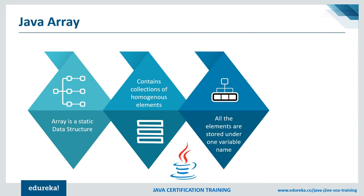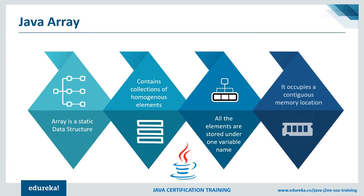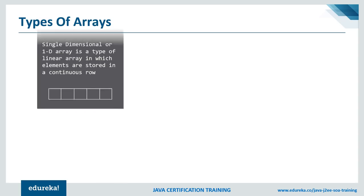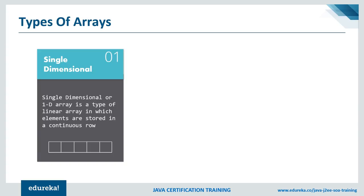All elements are stored under one single variable name via a reference variable pointing to the array. The data stored in an array occupies a contiguous memory location — the elements are neighbors. We can represent data as a single-dimensional or 1D array, which stores elements in a continuous row. Each element can store one state's population count, and the next element stores another state's population count, and so on.